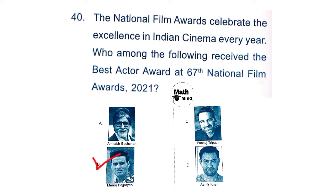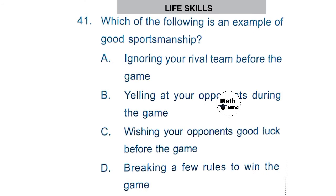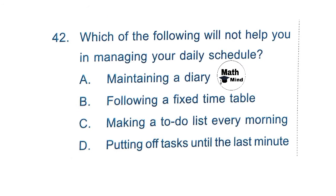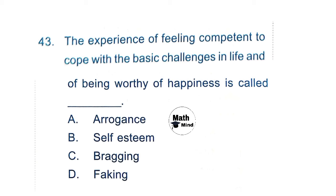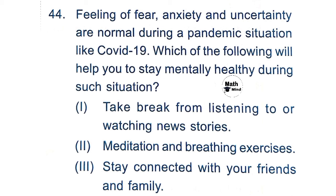Life Skills. Question 41: Which of the following is an example of good sportsmanship? Option C is correct: wishing your opponents good luck before the game. Question 42: Which of the following will not help you in managing your daily schedule? Option D is correct: putting off tasks until the last minute. Question 43: The experience of feeling competent to cope with the basic challenges in life and of being worthy of happiness is called — option B is correct: self-esteem.